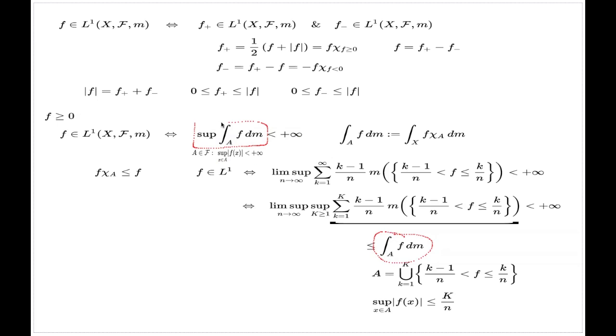And this number is, in fact, independent of capital K and little n. That's why this partial sum is controlled by this unique number, independent of capital K or little n. And that's why this lim sup of sups, lim sups of supremums, is controlled by this number as well. And so, again, I'll finish the topic.